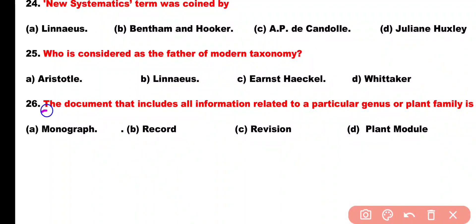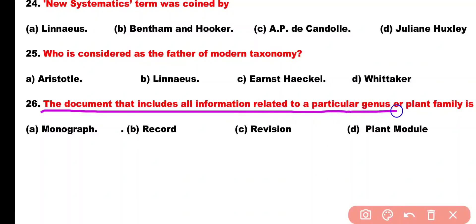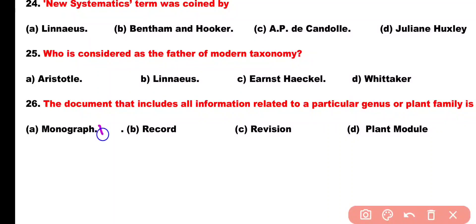Question number 26. The document that includes all information related to a particular genus or particular family is: Option A: Monograph, Option B: Record, Option C: Revision, Option D: Plant Module. Correct answer is Option A. A monograph is the document that includes all information related to a particular genus or plant family.